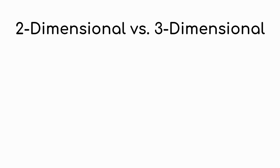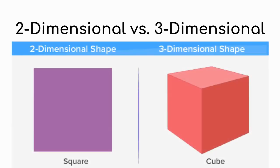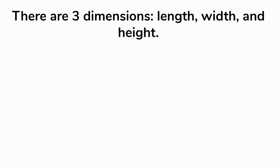Let's talk a little bit about two-dimensional versus three-dimensional — it's going to be a little bit of a review. So far, we've spent a lot of time talking about polygons, which are two-dimensional shapes. We've also talked about triangles and quadrilaterals. We're now going to move on to talking about three-dimensional shapes. So, instead of a square, we're going to be talking about something like a cube. To remind you what three-dimensional means: there are three dimensions — length, width, and height.